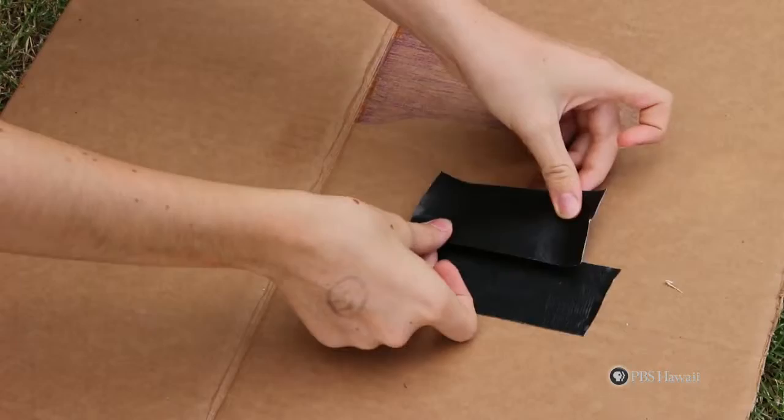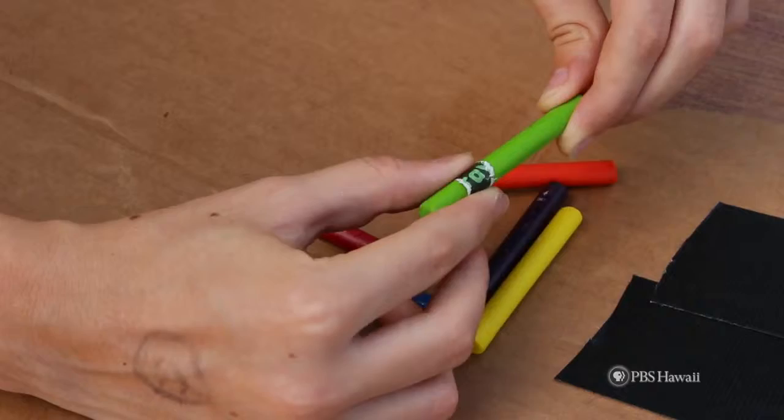Next, use masking tape to keep parts of your artwork clear of the melted crayon wax. Peel off the paper labels so each crayon can melt easily.